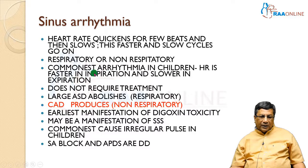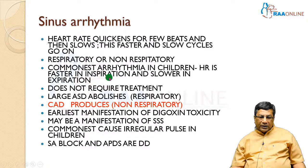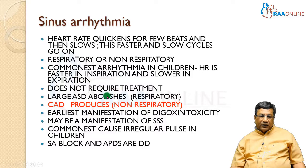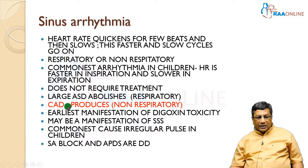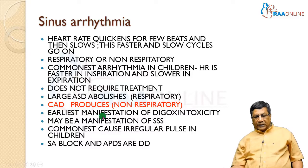Respiratory sinus arrhythmia most often happens in children. Whereas non-respiratory sinus arrhythmia, the heart rate is quickening and slowing down with no relationship to respiration. Non-phasic or non-respiratory sinus arrhythmia can happen in the elderly, and if it happens, it may indicate coronary heart disease, sick sinus syndrome, or as a manifestation of digoxin toxicity.